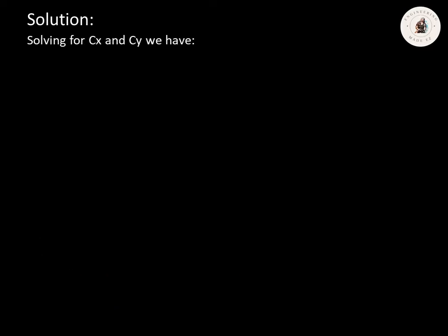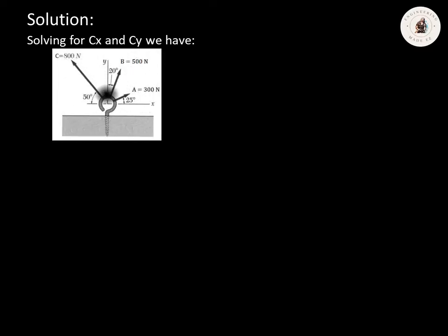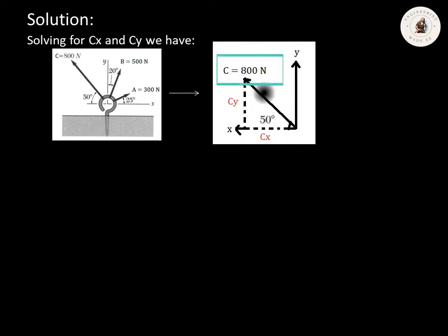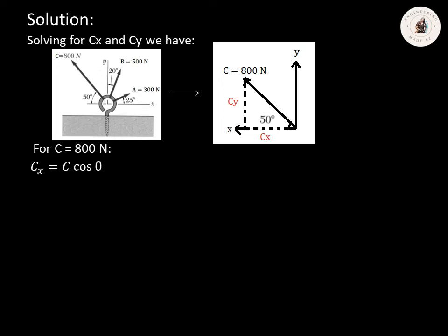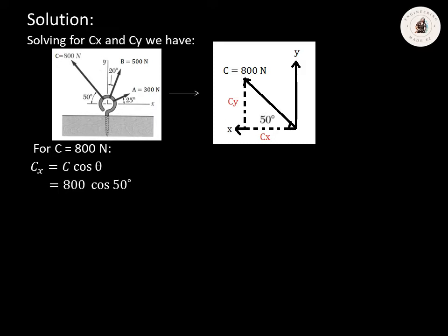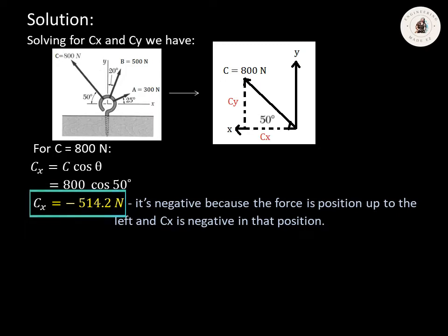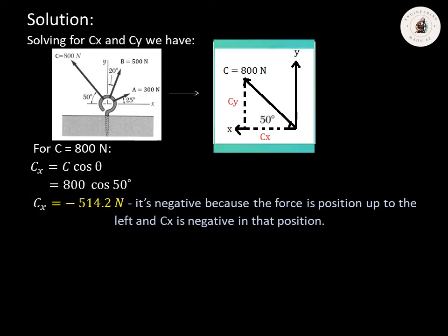Next, we're going to solve for CX and CY. We need to focus on force C which is equivalent to 800 Newton inclined at an angle of 50 degrees. To solve for CX: as you can see in the figure, CX is at the adjacent side. So CX equals C multiplied by cosine theta. C is 800 Newton and theta is 50 degrees, so CX equals 800 multiplied by cosine 50 degrees. Using our calculator, CX equals 514.2 Newton. The sign convention is negative because the force is positioned up to the left, and CX is negative in that position.